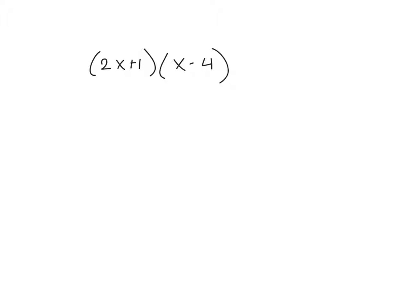But sometimes we use a model called the area model to organize our work. So what that looks like is we put one of our binomials across the top, that's 2x plus 1, and one of our binomials across the side. And there's our x minus 4.